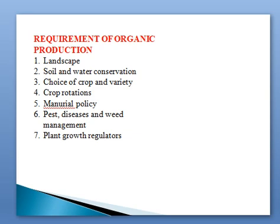The next requirement is manure policy. It includes the use of different manures such as FYM, compost, and vermicompost. Manure should not be treated with chemical compounds and should be used in its natural form according to the standards of the certifying agency. The use of synthetic nitrogenous fertilizer should be avoided. For pest, disease, and weed management, different cultural practices, mechanical practices, and biological control measures should be followed to maintain pest populations up to the Economic Threshold Level. The use of chemical inputs should be strictly prohibited.